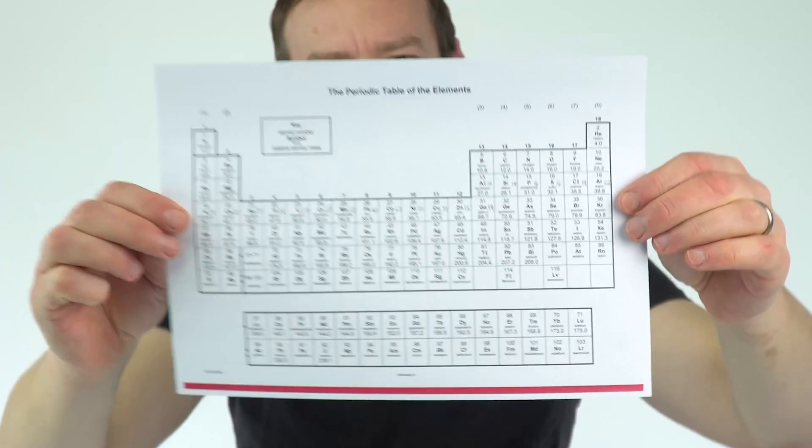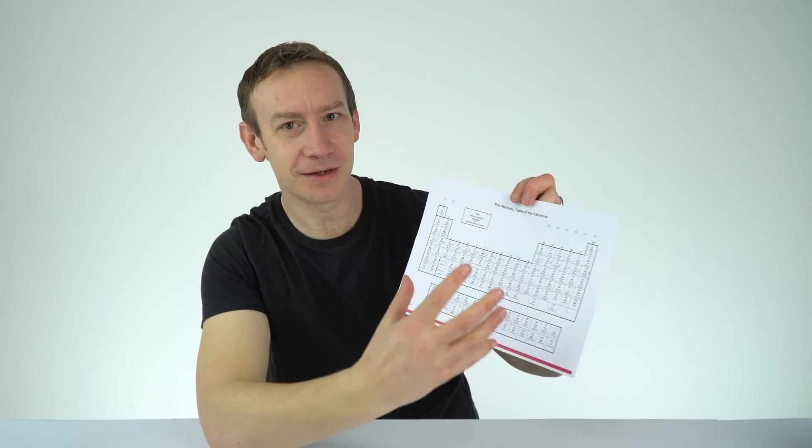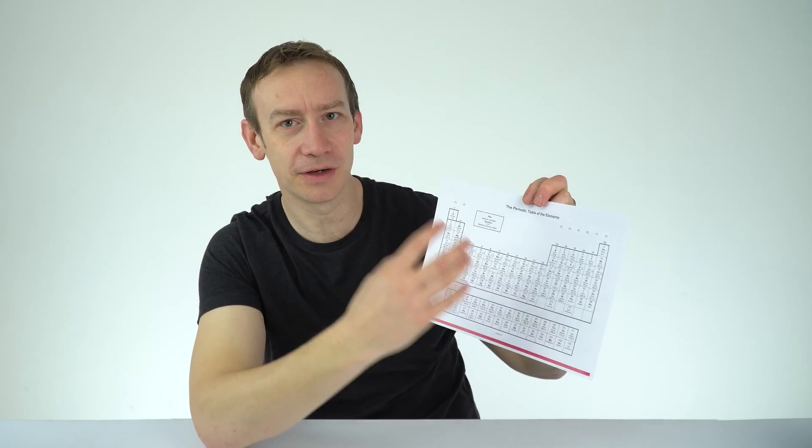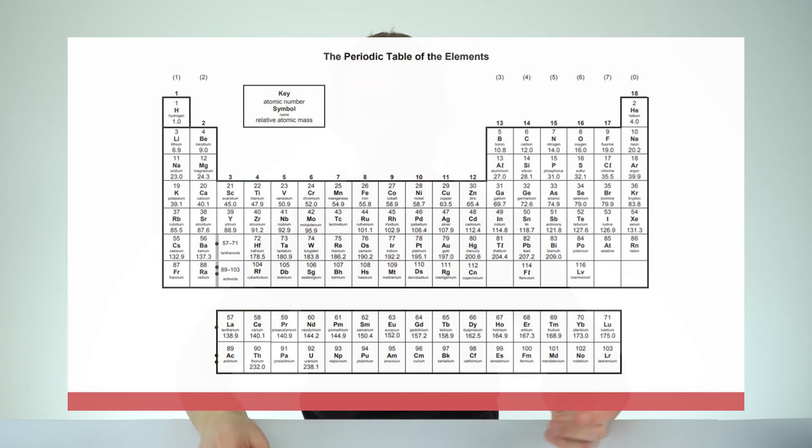So this is a periodic table you should recognize it, but I've taken it from chemistry. This is actually the OCR A-level chemistry one and we're going to make it a bit more physics-y and we're going to be investigating the ratio of protons to neutrons in different elements.